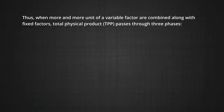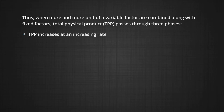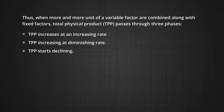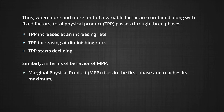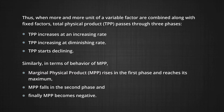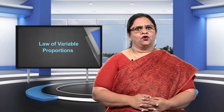Thus, when more and more units of a variable factor are combined along with fixed factors, the total physical product passes through three phases. First, it increases at an increasing rate. Next, it increases at a diminishing rate, and then eventually it starts declining. Similarly, in terms of the behavior of the marginal physical product, the marginal physical product rises in the first phase, reaches its maximum, and then falls in the second phase. And in the third phase, it becomes negative. This law operates in the short run when all factors of production cannot be increased or decreased simultaneously.